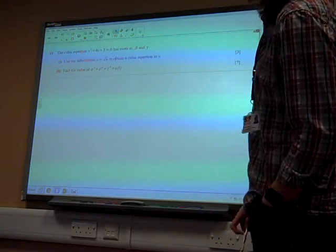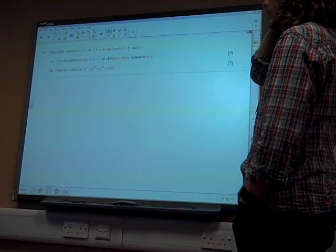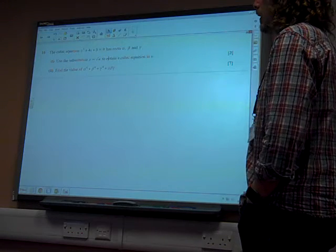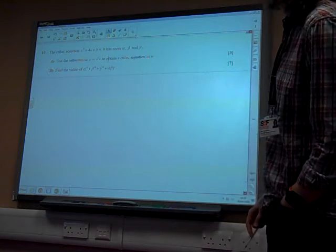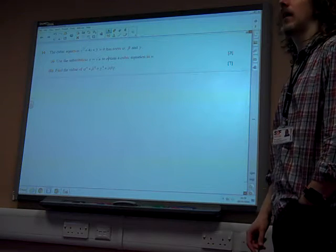Thanks John. Okay, question 10. The cubic equation x cubed minus 4x plus 3 equals 0 has roots alpha, beta, gamma. Use the substitution x equals root u to obtain a cubic equation in u.